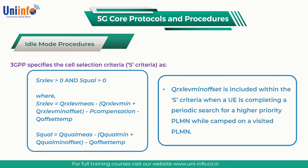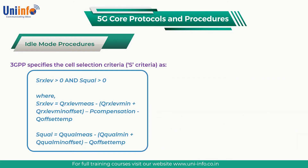QRX Level Minimum Offset is included within the S criteria when a UE is completing a periodic search for a higher priority PLMN while camped on a visited PLMN. The value of QRX Level Minimum Offset is always positive, so the cell selection criteria becomes more stringent. The objective of using this offset is to help reduce the potential for ping-pong.